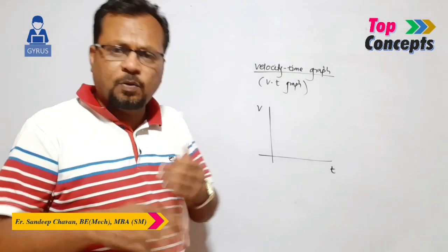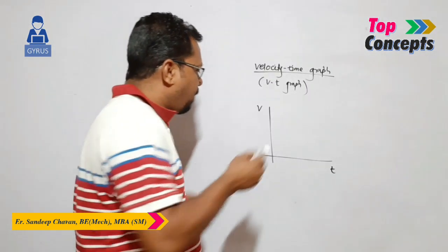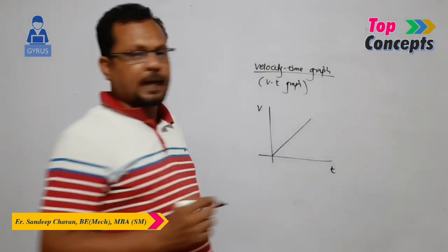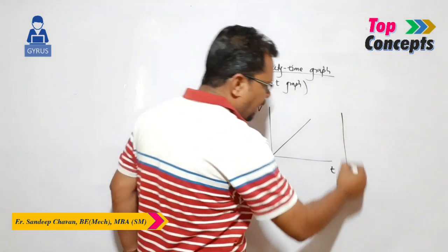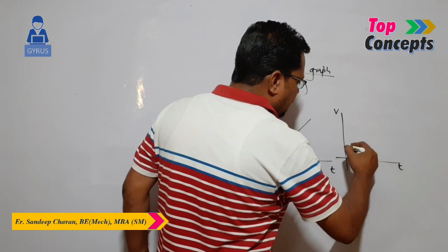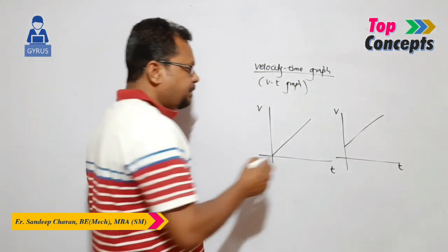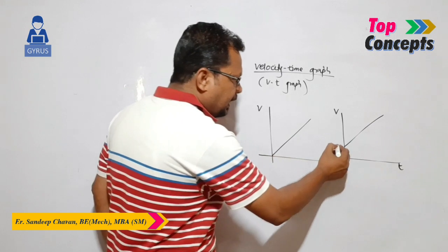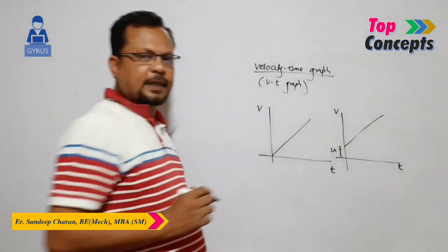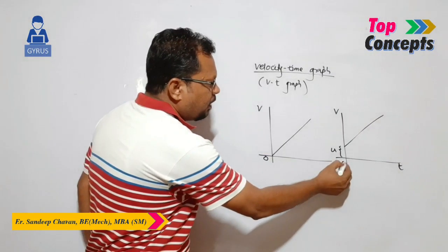We will try to interpret and analyze the graph. Suppose I have a graph of velocity versus time passing through the origin. And again I have one more graph — V versus T — a straight line but not passing through the origin. The difference between the two is that here there is a certain intercept with the y-axis, that is U, and here it is directly starting from the origin.